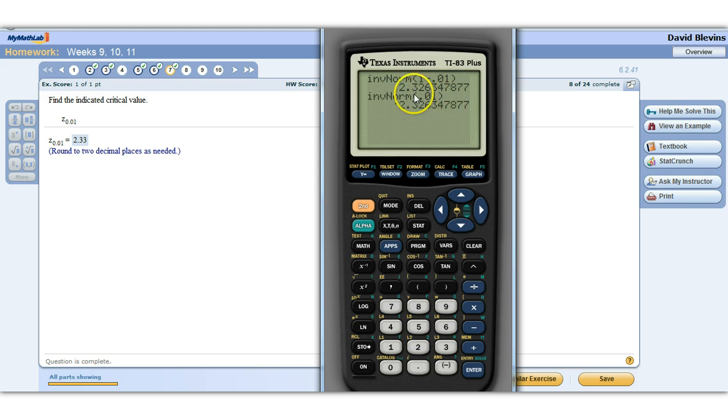just like it was up here, but because we forgot to subtract it from 1, it gives us the negative version of the number. Remember, the z-distribution is perfectly symmetric. So the number that corresponds to an area of 1% in the right tail will be the opposite of the number that has that area in the left tail. So because of that symmetry, that's why we're getting the sign changes.